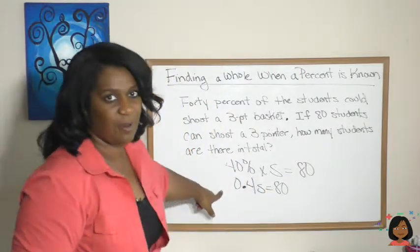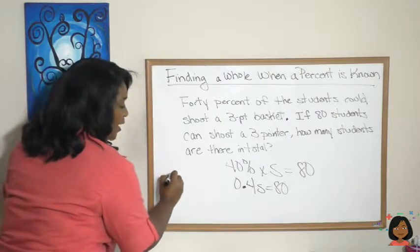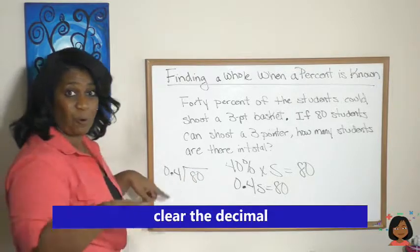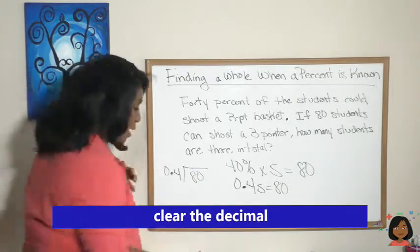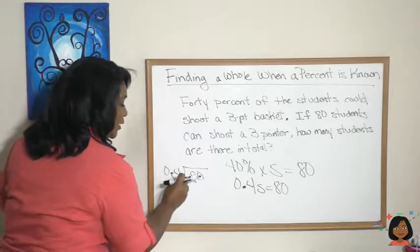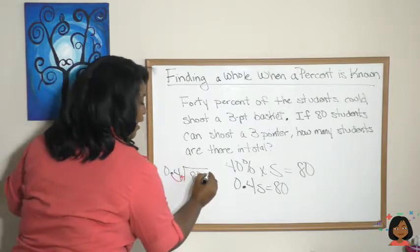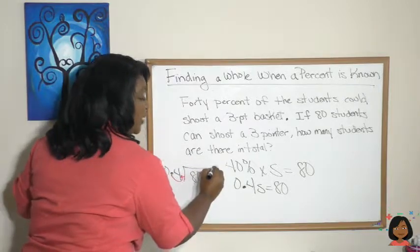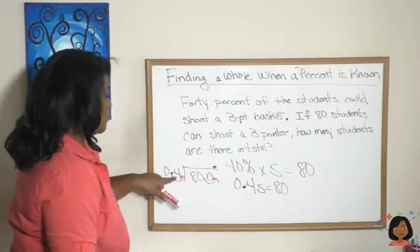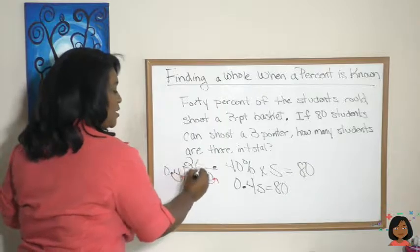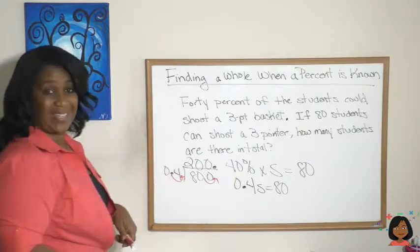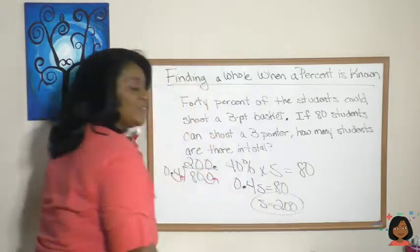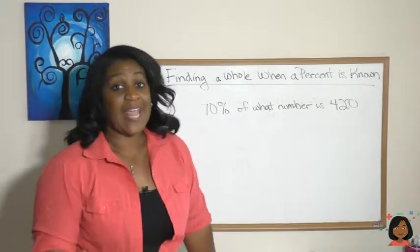Now this is just a division problem. Remember when we divide by a decimal, we have to move that decimal over to the right by clearing it. I'm gonna use my red marker—we're gonna clear it, we're gonna move this guy over one place. And now we've got 4 into 800. 4 goes into 8 two times, zero and zero. So our answer, the total number of students, is 200 students.